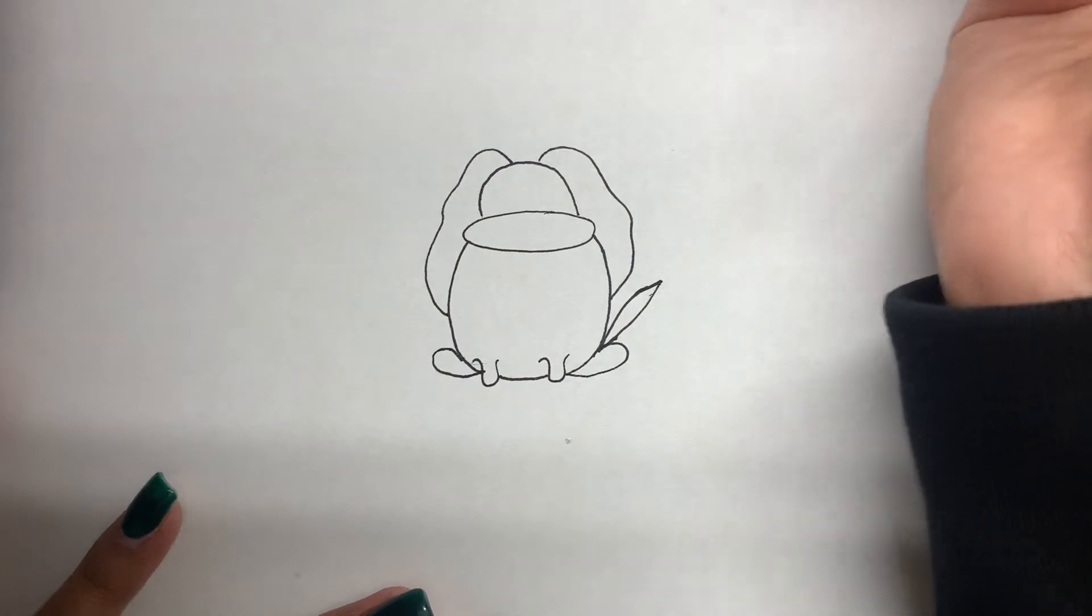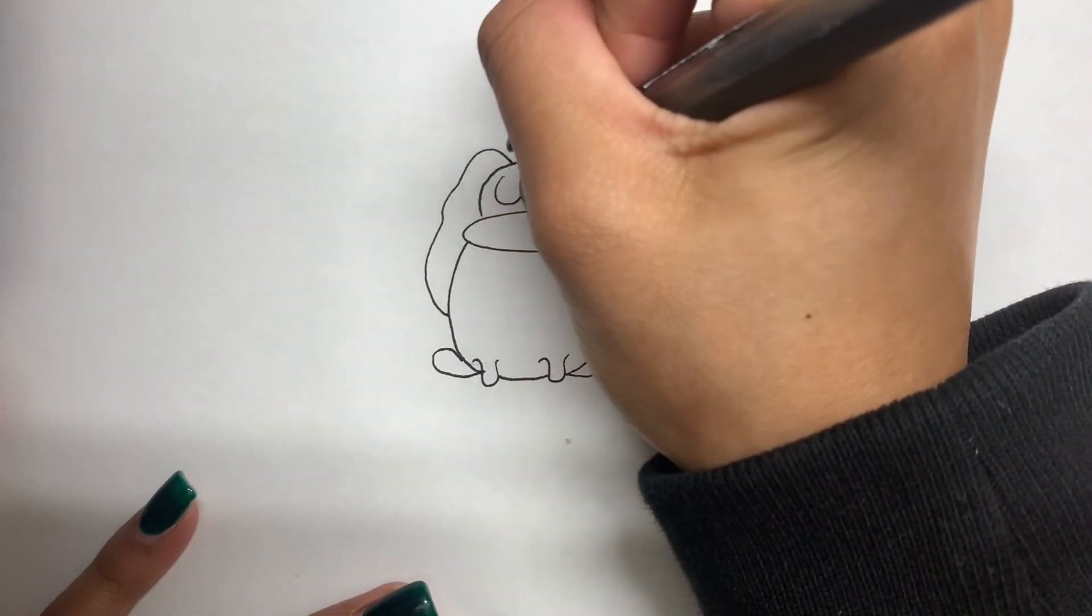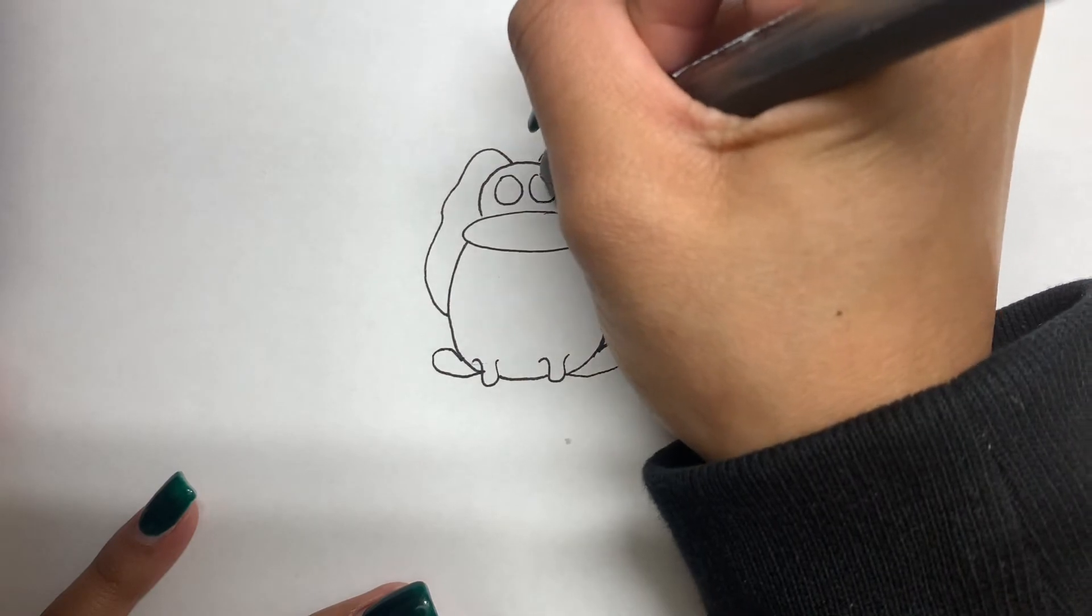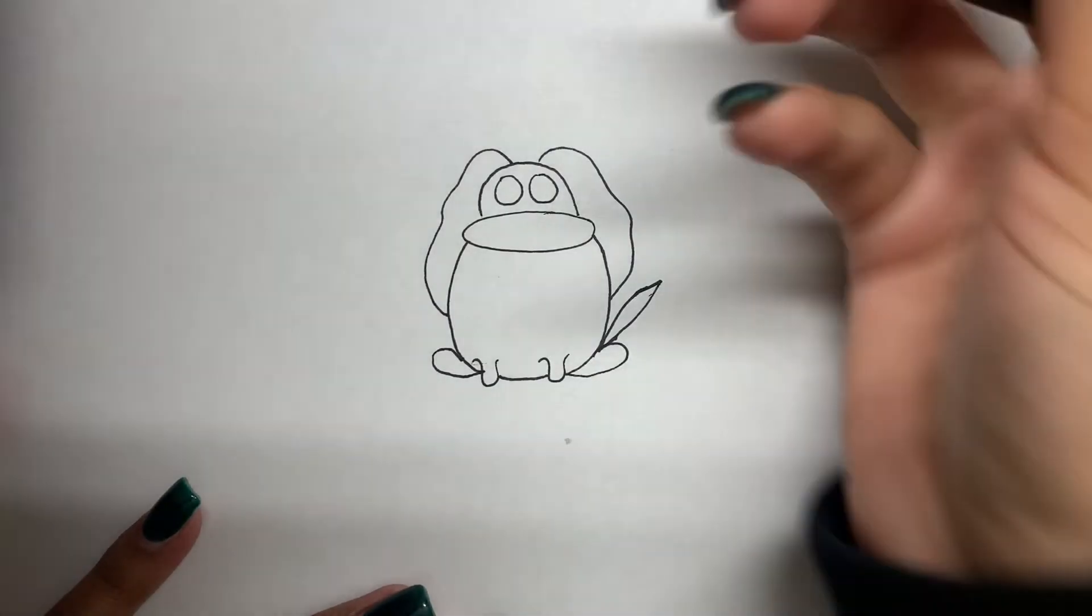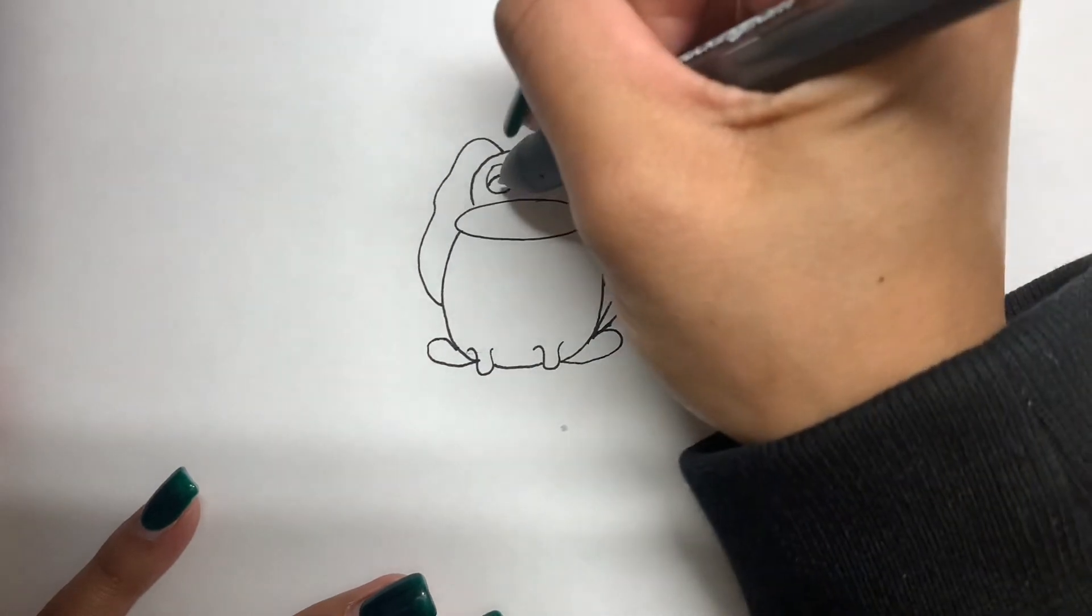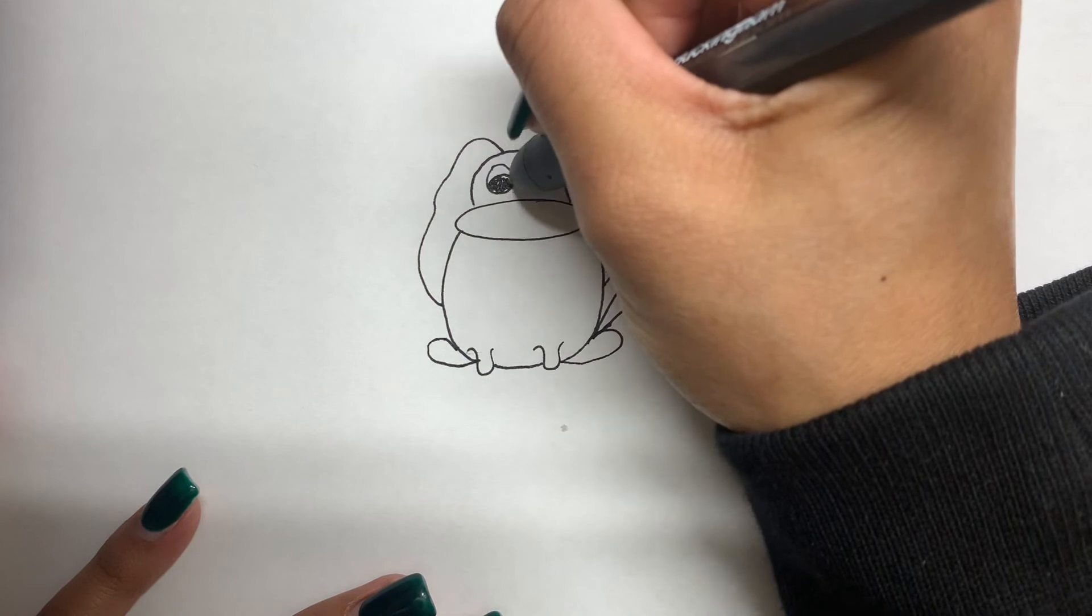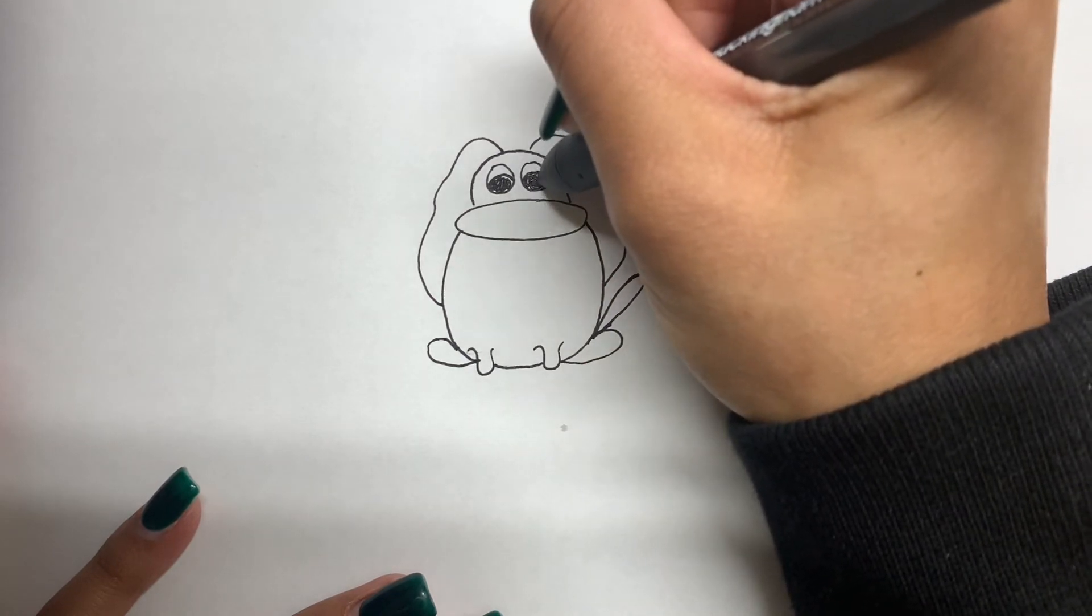Now finally, the face. So for the face, we're going to go ahead and come to the semicircle we drew and draw two complete circles. They can be as big as you want or as small as you want. And then we're going to draw two semicircles inside, about half of the space of the original circles. And we're going to fill those in. And then you have your eyes.